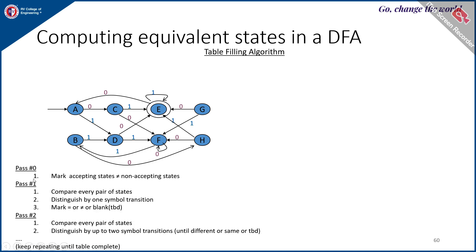In pass one, we mark accepting states as not equivalent to non-accepting states. Since E is the final state, with respect to E all other states are distinguishable, meaning they are not equivalent, because E is accepting and all other states are non-accepting. This is the first step.